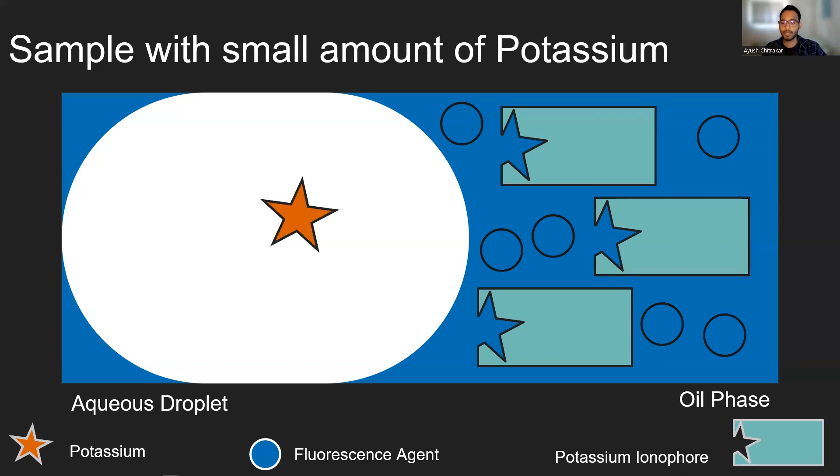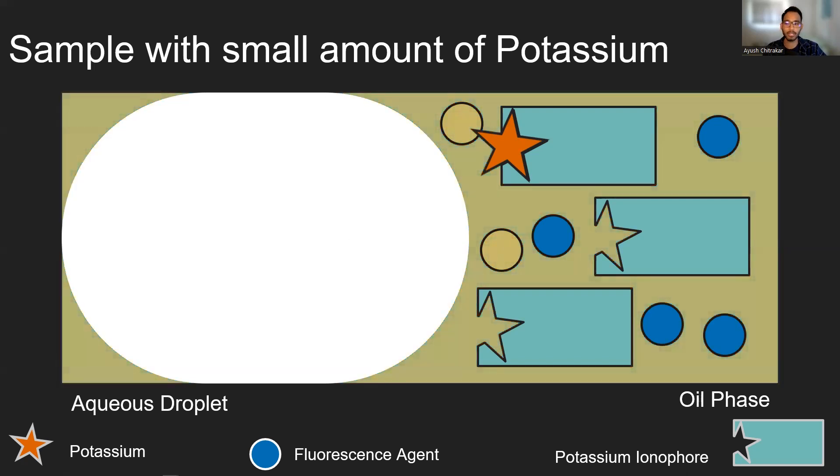When we have a sample with a small amount of potassium present, the potassium is able to bind to the potassium ionophore, which causes some of the fluorescent agents to fluoresce. This increases the fluorescence or the brightness of our oil phase, which we can measure.